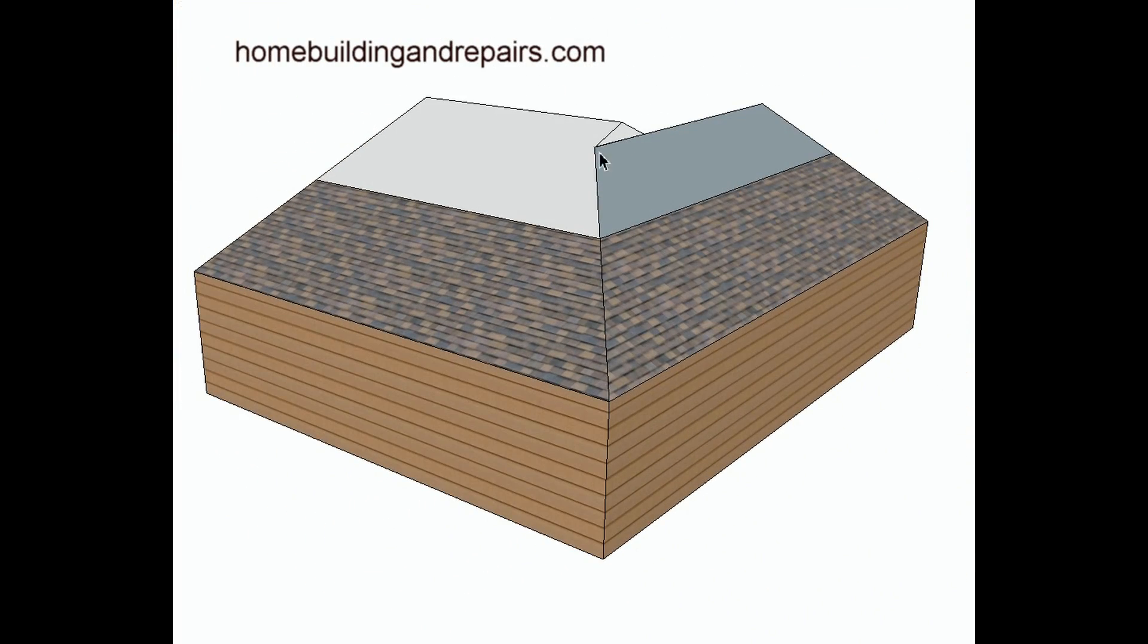Now you can always get rid of this gable end. You can run this hip all the way up and then run it down on the other side. In other words, continue this plane all the way up, and then you would basically have a hip that would run all the way up to here and a little hip that would run down to here. That's another way of fixing that.